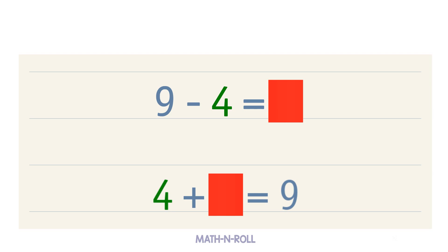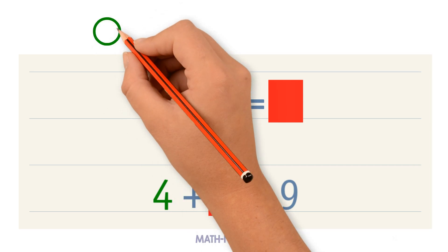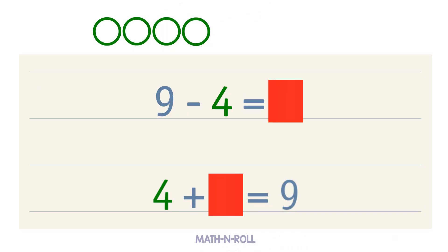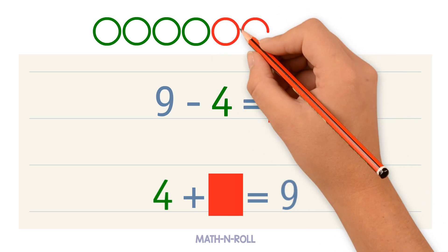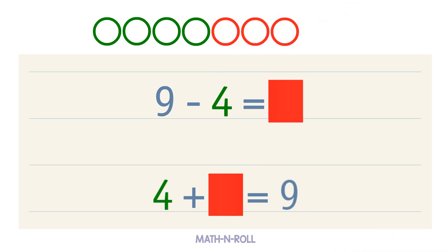Use the model to solve. We have 4 circles. How many more circles do we need to make 9? We need 5 more circles. 4 plus 5 equals 9. 5 is our blank, so 9 minus 4 equals 5.